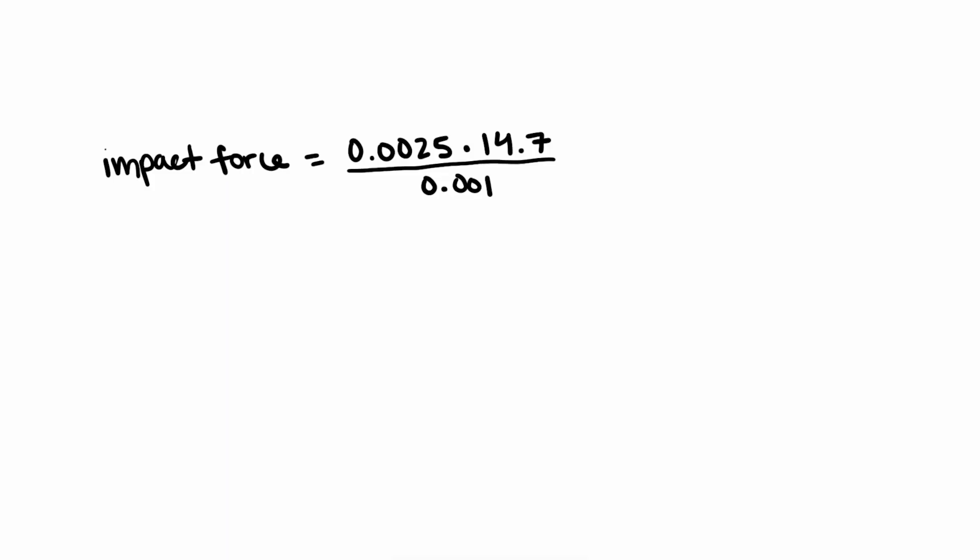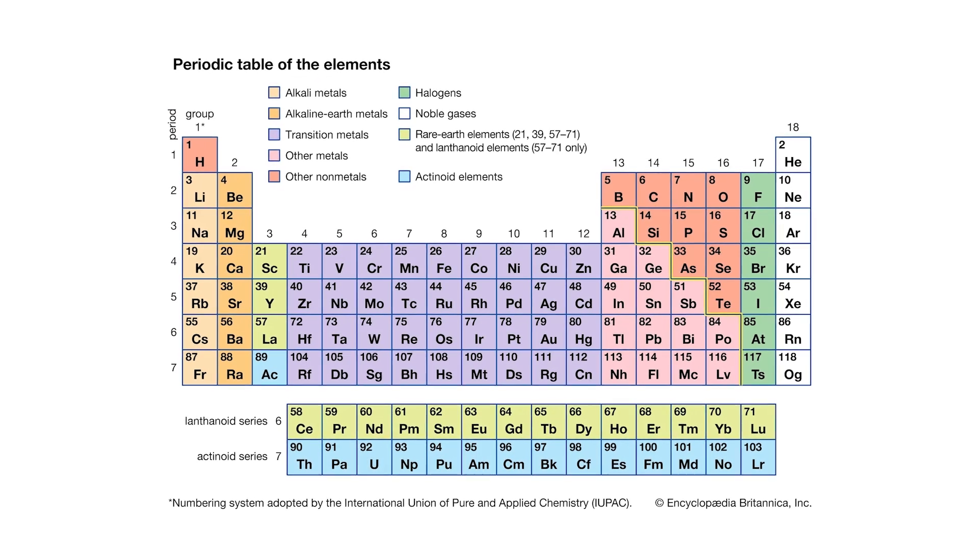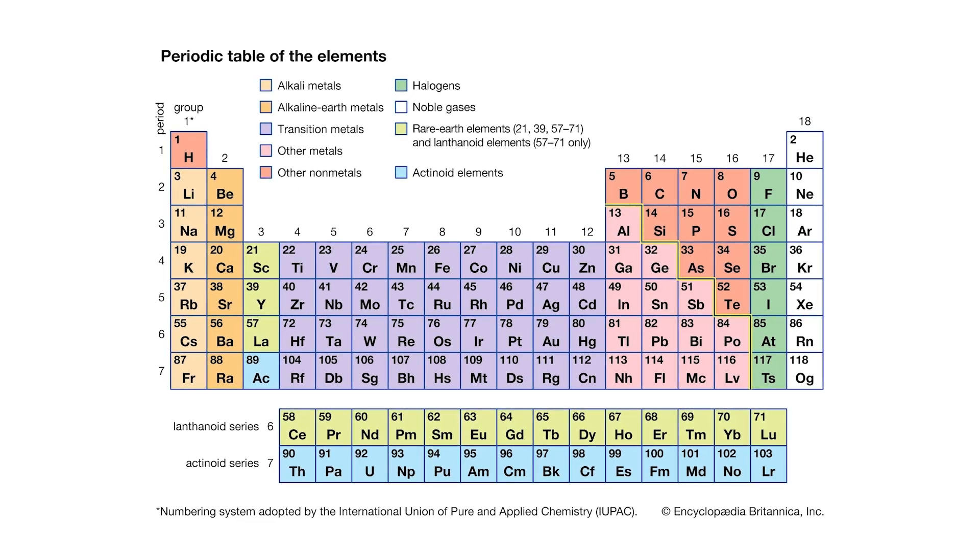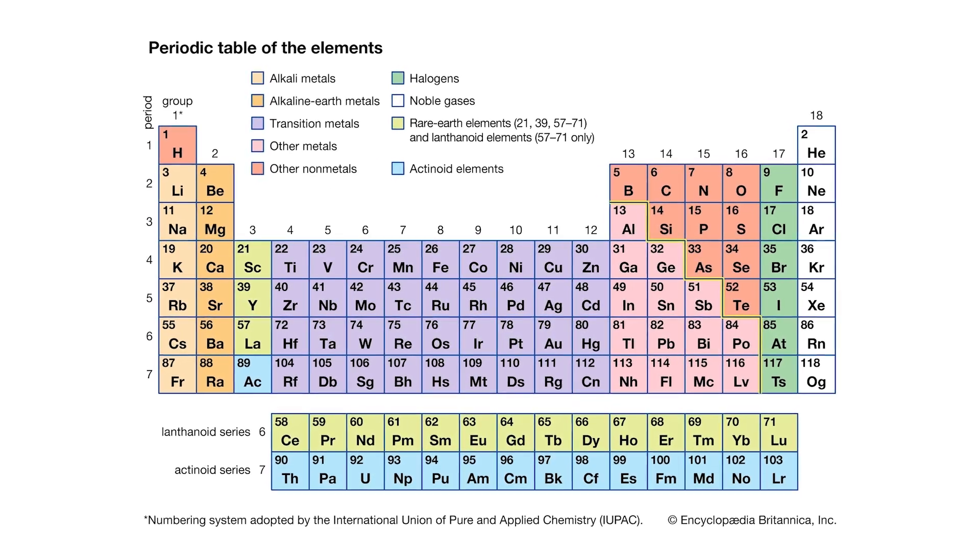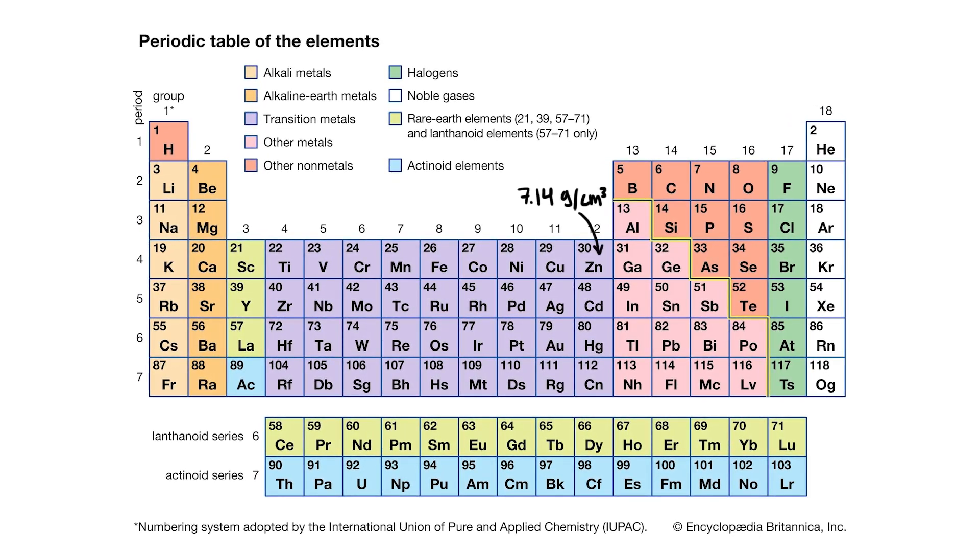That's quite a lot more mass, though. A hundred times more, actually. Unfortunately, there's no material found on Earth that we could make our penny out of to achieve that mass without changing its size as well. We'd need a material a hundred times more dense than zinc, the main element pennies are made of nowadays.